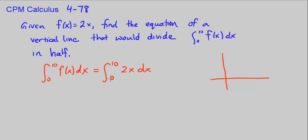2x is a line with slope 2 and it crosses through the axis at (0,0). So 0 is here, 10 is here.